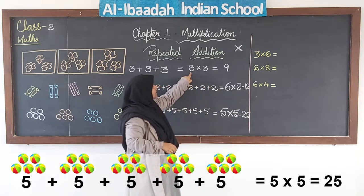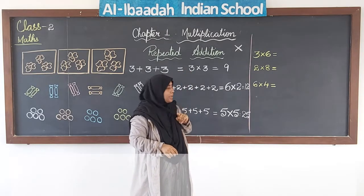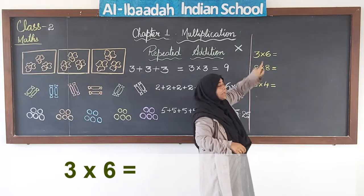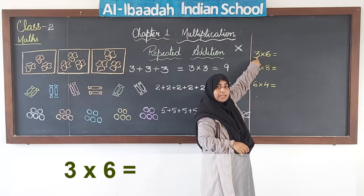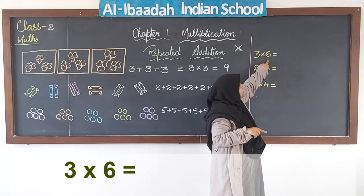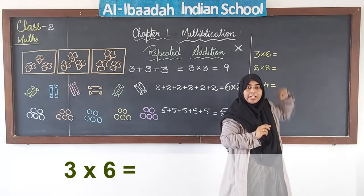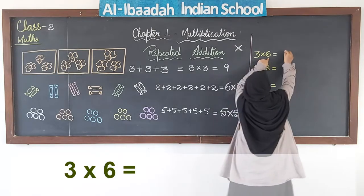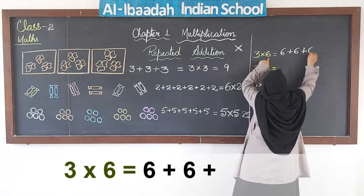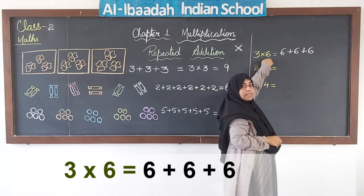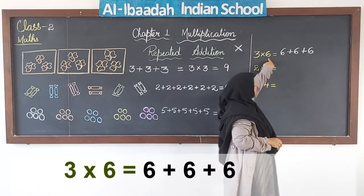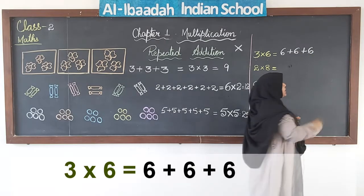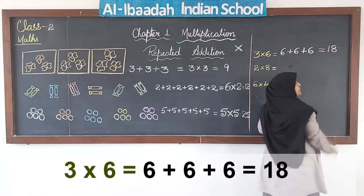The first number tells us how many times we are adding, and the second number tells us which number has been added. For example, 3 into 6 means 3 times I have to add 6. So 6 plus 6 plus 6 — adding 6 three times. 6 plus 6 is 12, and 12 plus 6 is 18. So 3 into 6 is equal to 18.